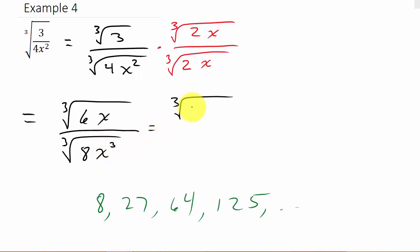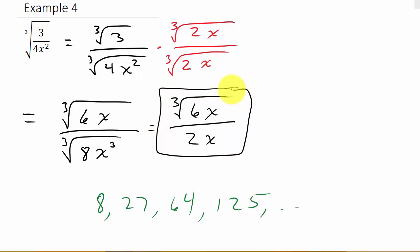This gives me the cube root of 6x over the cube root of 8x cubed. 3 times 2x is 6x in the numerator. In the denominator, 4 times 2 is 8 and x squared times x is x cubed. The cube root of 8 is 2, and 3 goes into 3 one time so that's x. The answer is the cube root of 6x over 2x. Don't be tempted to cancel the x's or the 6 and 2 — you can't do that because the 6x is under a radical and the 2x is not. So don't do that. I hope this video helped — check out my other videos, give me a like, share, subscribe. Thanks for watching.